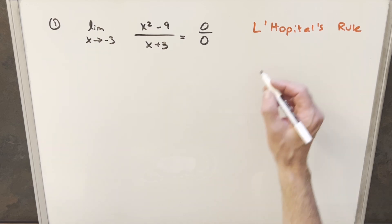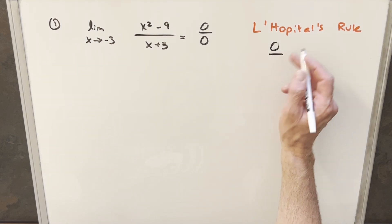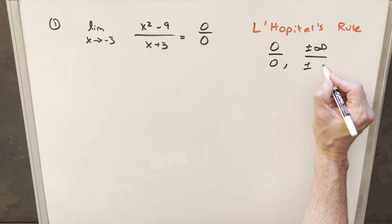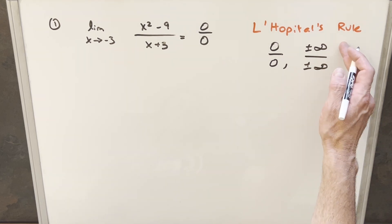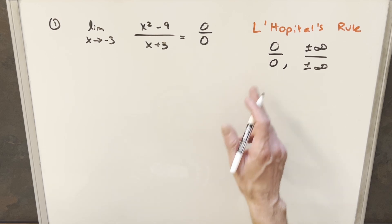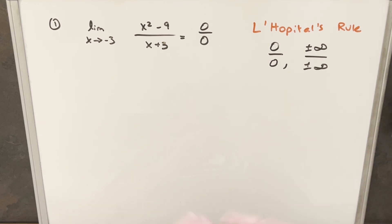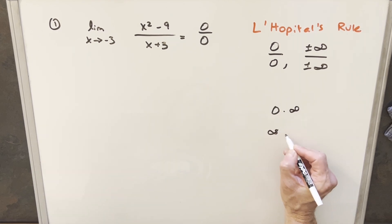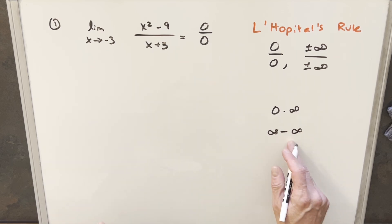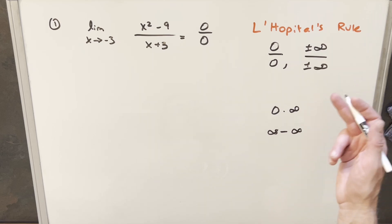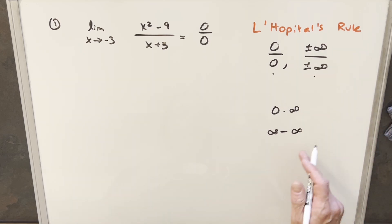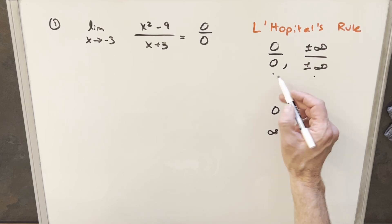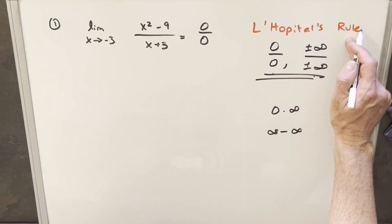There are a few cases of indeterminate forms where we can use L'Hôpital's Rule: when we have zero over zero, or when we have plus or minus infinity over plus or minus infinity. These are the only two cases. If you have infinity over zero, that's not an indeterminate form — it's going to infinity. There are other indeterminate forms like zero times infinity or infinity minus infinity, and for those you need to manipulate the expression into one of these two forms before you can use L'Hôpital's Rule.